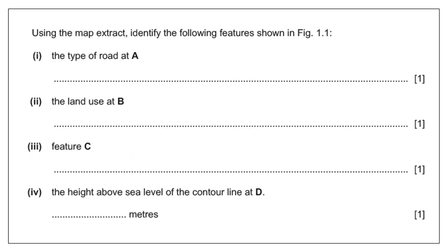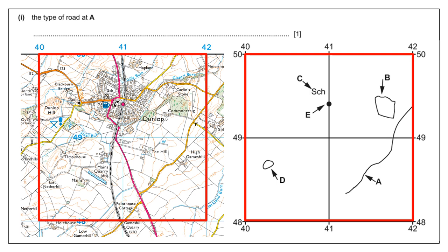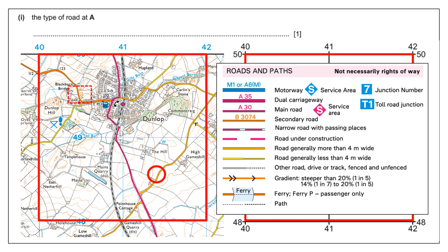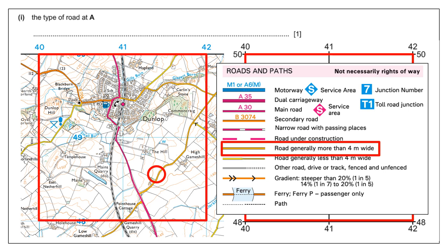For the feature identification question — sometimes four marks, sometimes five — you need to look at the map extract and use the key. We're looking at the type of road at A. Not all of the road has been drawn; it stops at the intersection of a red road going north to south. It could look like a B road, but on closer inspection the colors are actually slightly lighter. It's a road generally more than four meters wide. If you can find a road number written on, such as B706, that confirms it's a secondary road.